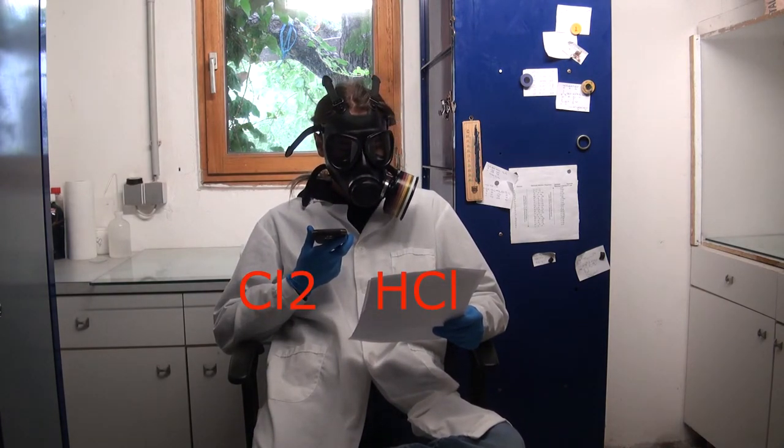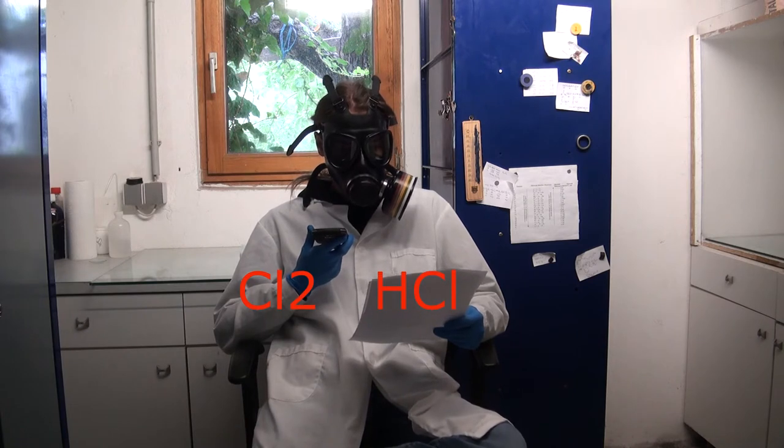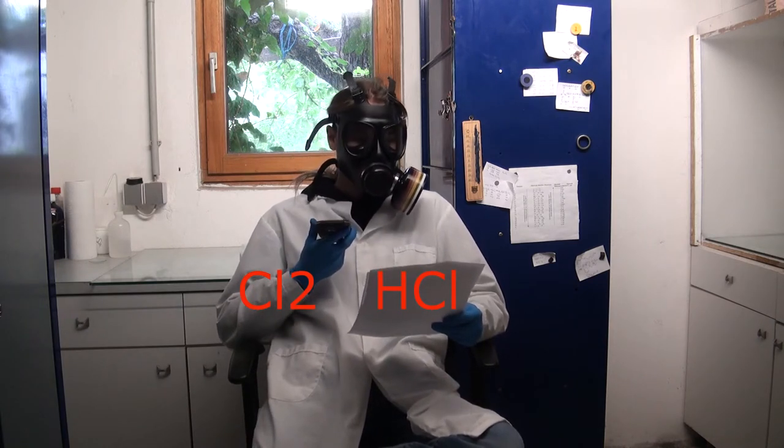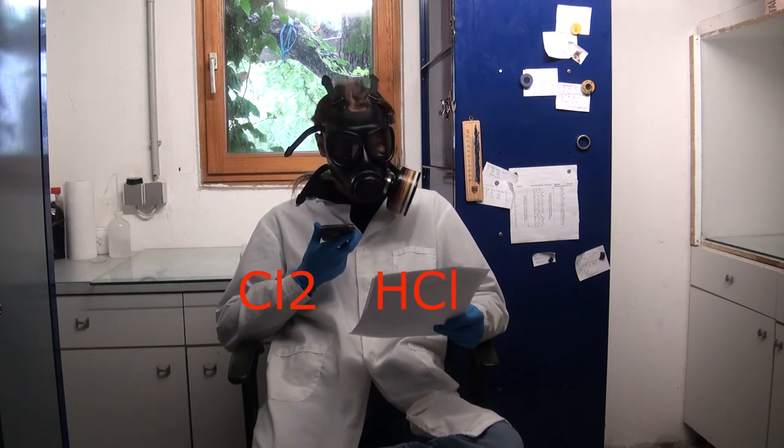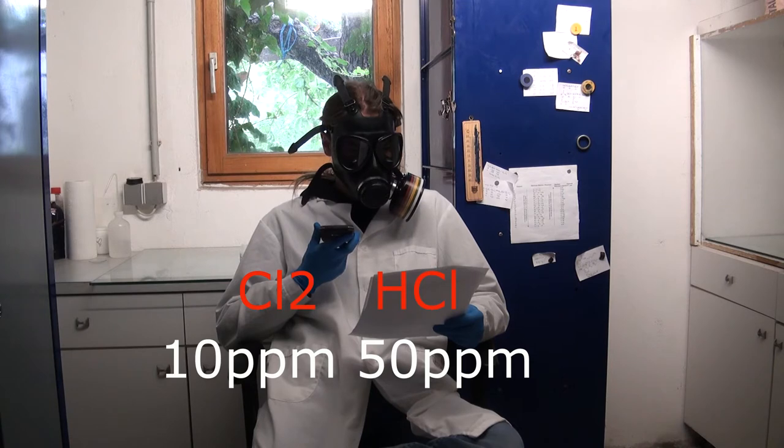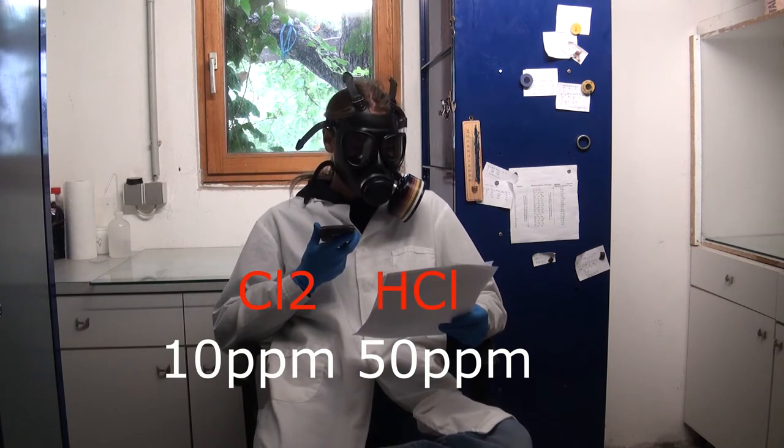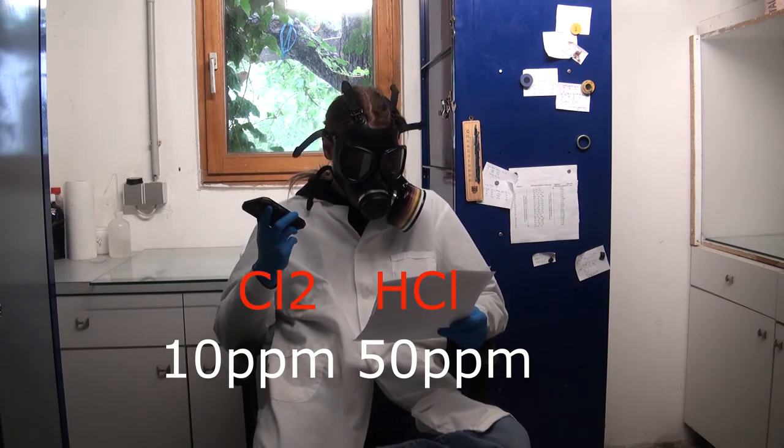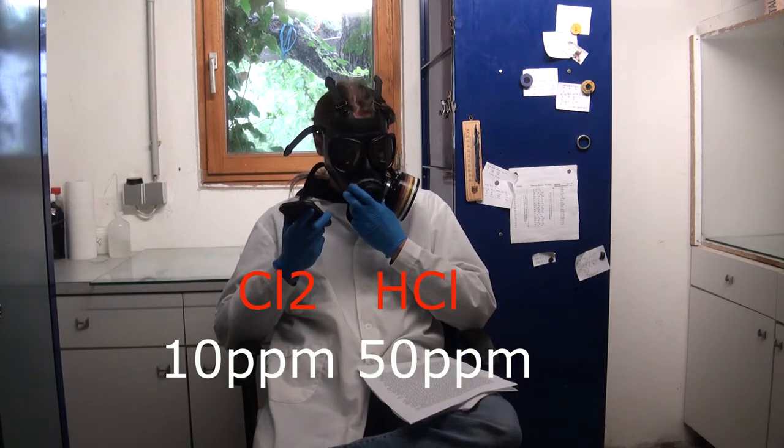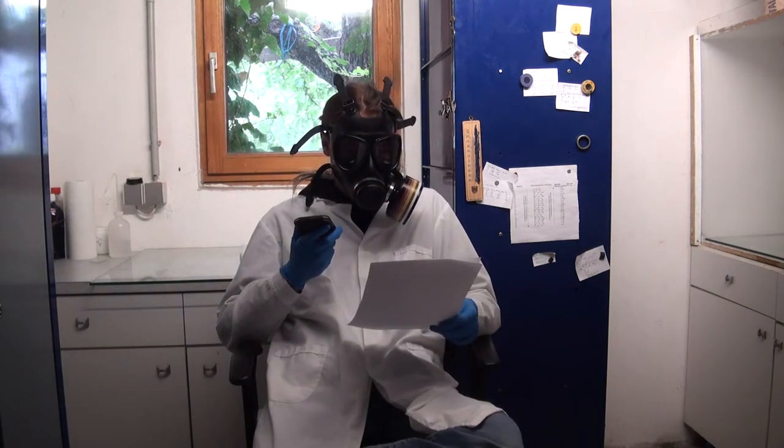When it comes to the IDLH values, short for immediately dangerous for life and health, hydrogen chloride has 50 ppm parts per million, and chlorine has 10 ppm. A fitting filter has to be used.